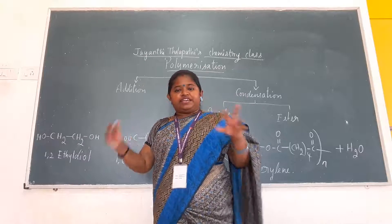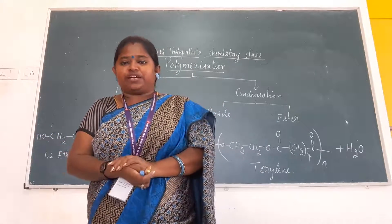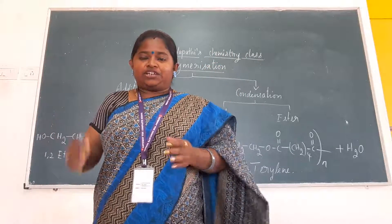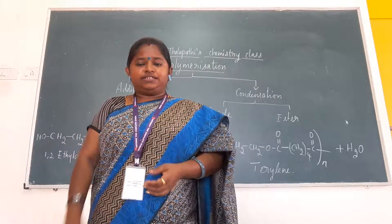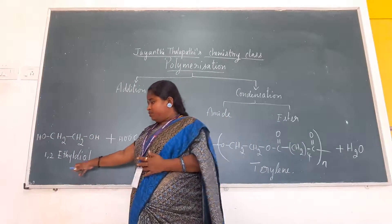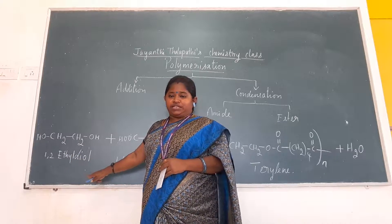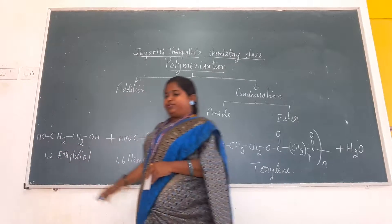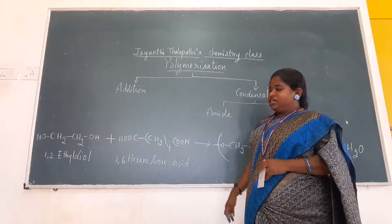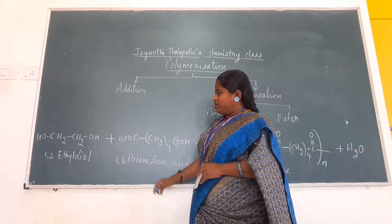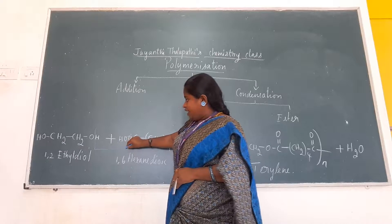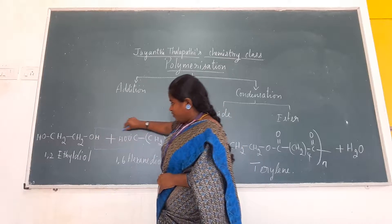Ester linkage — when this happens, you know the esterification reaction. Esterification is a reaction between alcohol and acid. Over here also we have taken alcohol. For example, ethyl diol — 1,2-ethyl diol. So ethyl diol reacts with 1,6-hexane dioic acid. When that reacts with the ethyl alcohol, the hydrogen from the alcoholic group and the hydroxyl from the acid group will react.